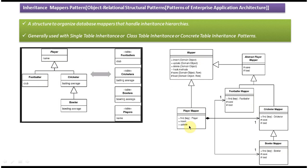What does each mapper do? The mapper class is responsible for getting values from the domain object and saving the information in the corresponding database table, as well as getting values from the table and storing them in the corresponding domain object. For example, the Player mapper gets values from the Player domain object and saves that information in the Players table.